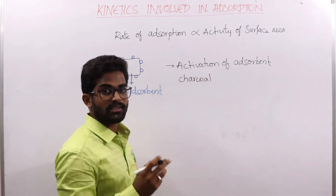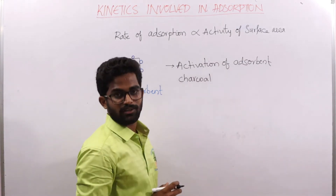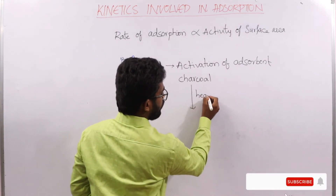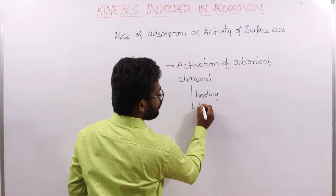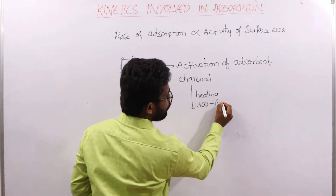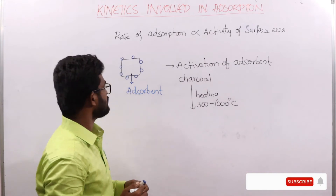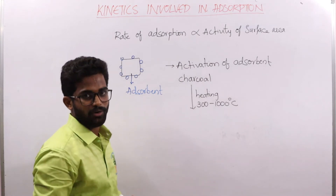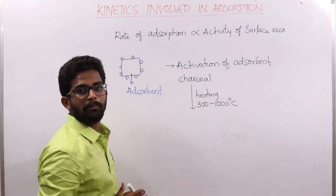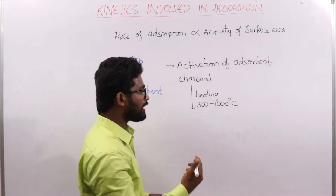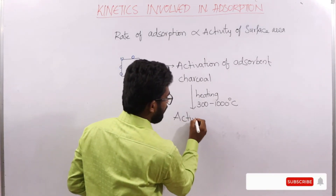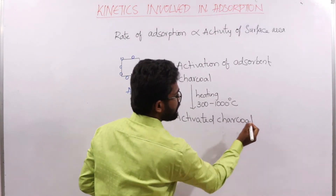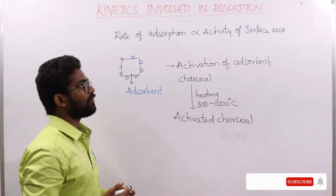We commonly use the term activated charcoal. Activated charcoal is produced by heating charcoal up to 300 to 1000 degrees centigrade. This heating eliminates the impurities present on the surface of the charcoal, creating a new form called activated charcoal.